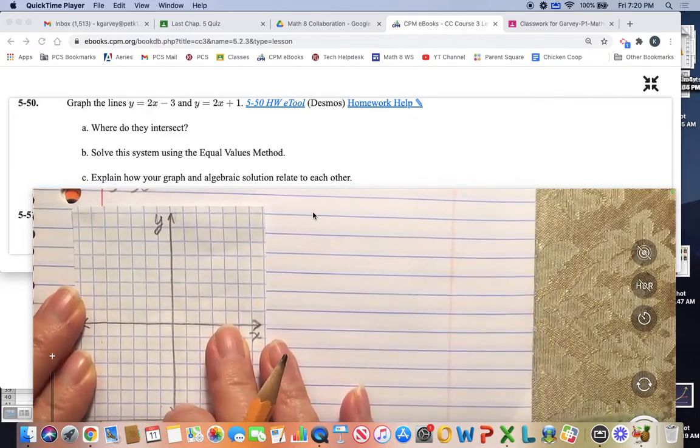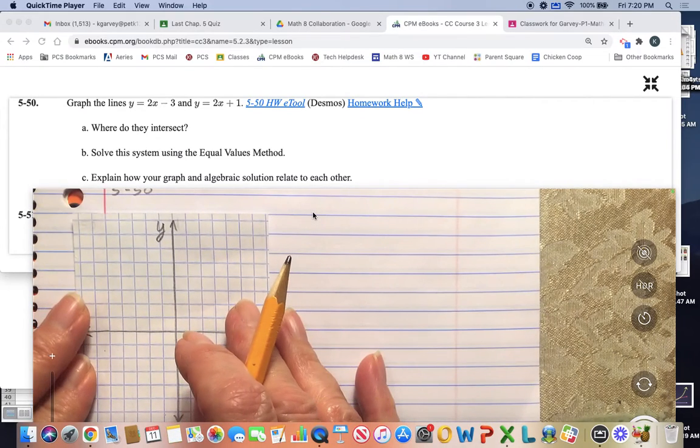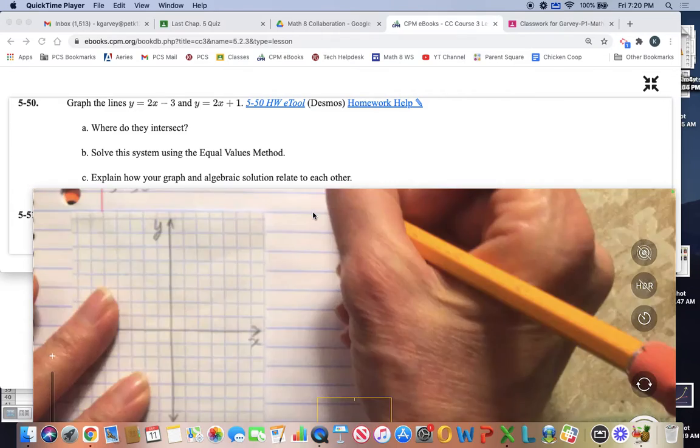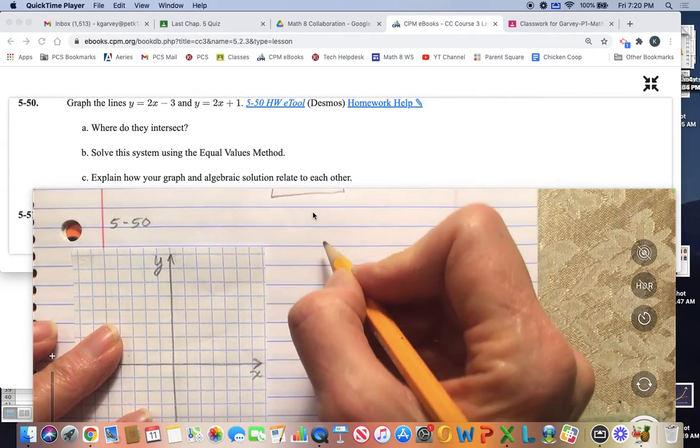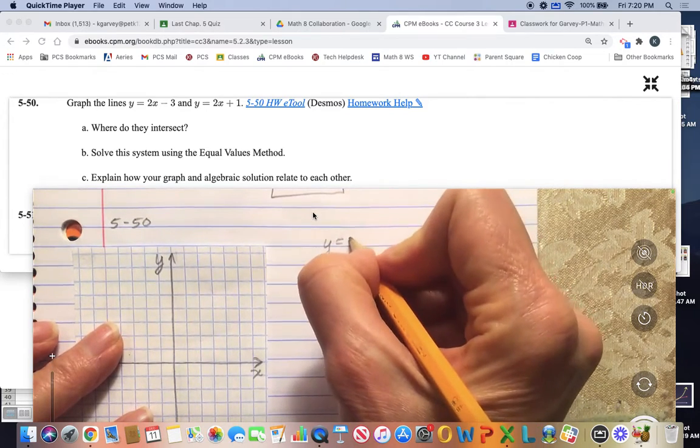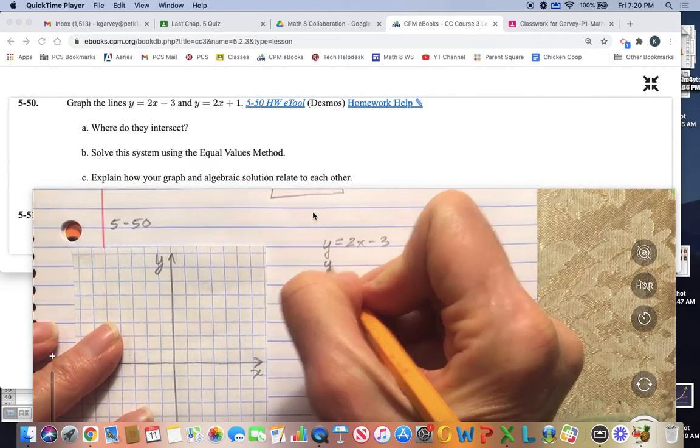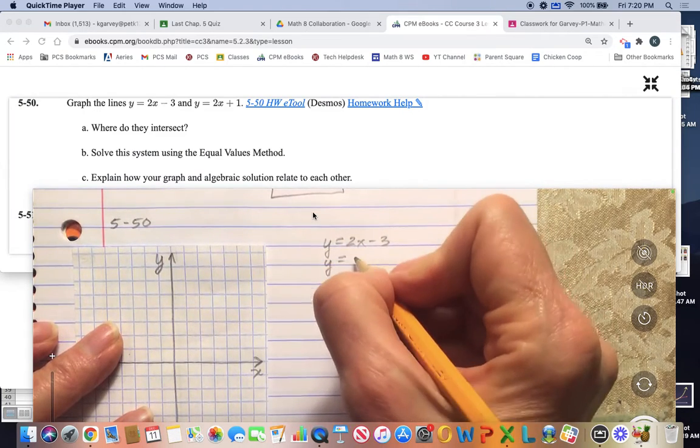So what I'll do is look at the first line, which is 2x. Here, I'll go ahead and write that down. All right, y equals 2x minus 3.